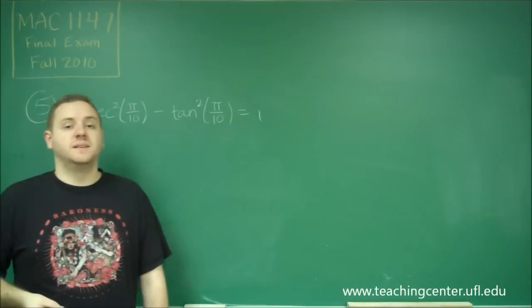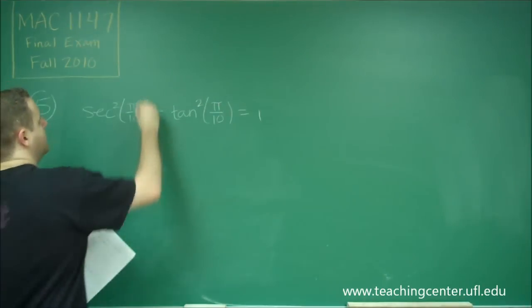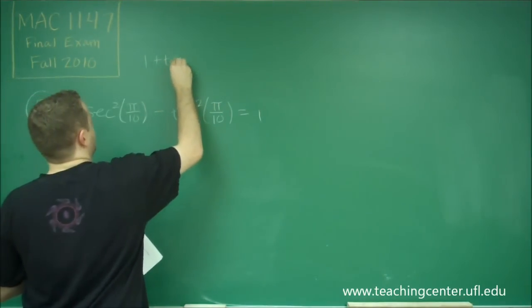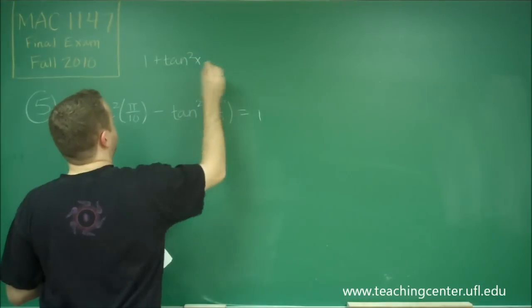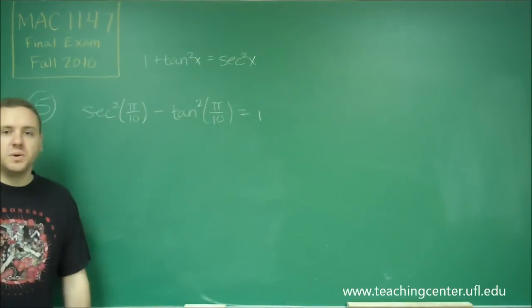So remember that our identity, our trig identity involving tangent and secant, is we know that one plus tangent squared of some angle x is equal to secant squared x.